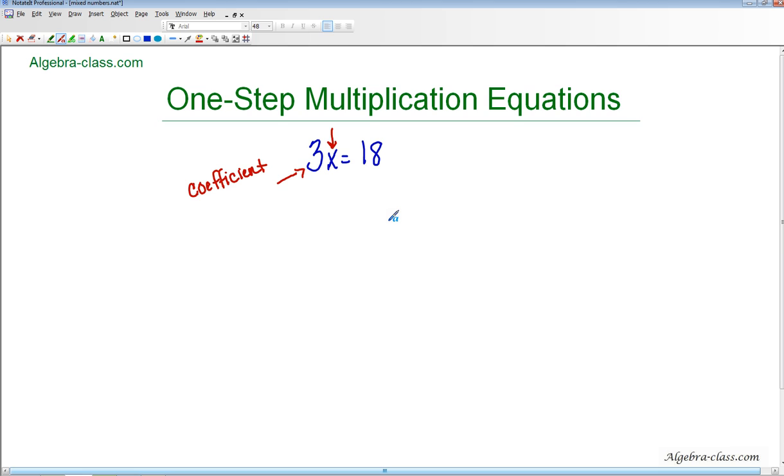And the opposite of multiply is divide. So we want to divide by the number that we want to get rid of. The number that we want to get rid of is 3. So we're going to divide by 3 on the left-hand side. And whatever I do to one side, I must do to the other side. So that means that I'm going to divide by 3 on the right-hand side as well.